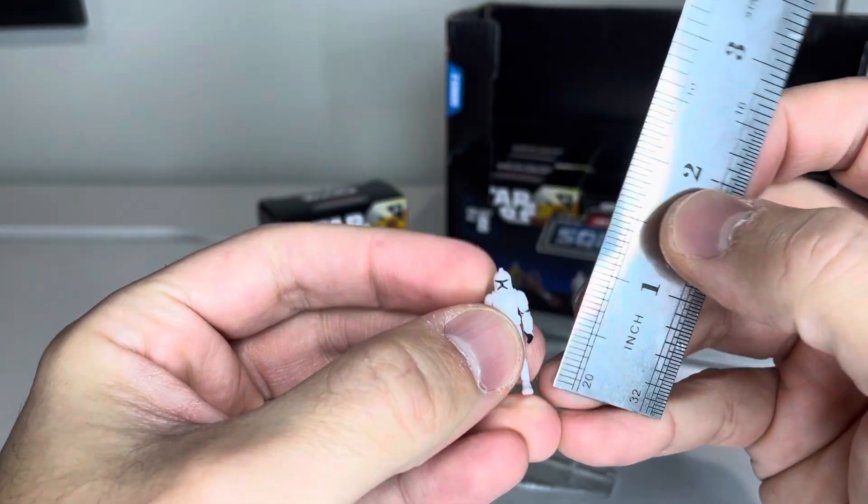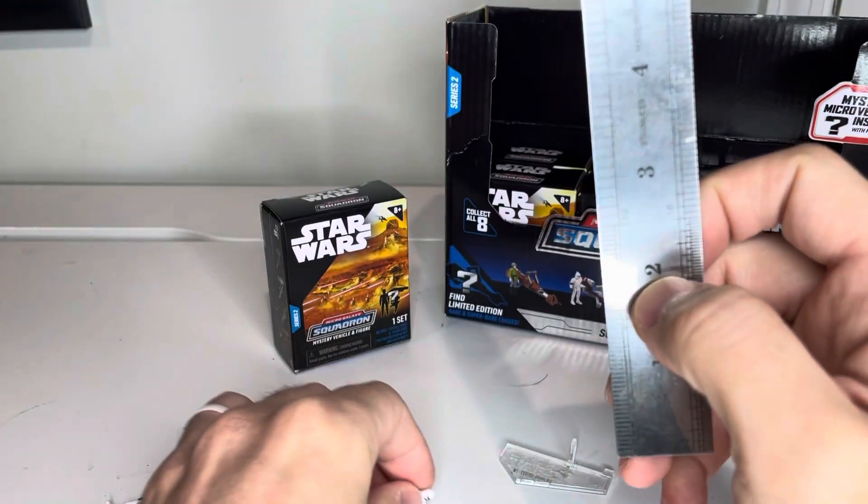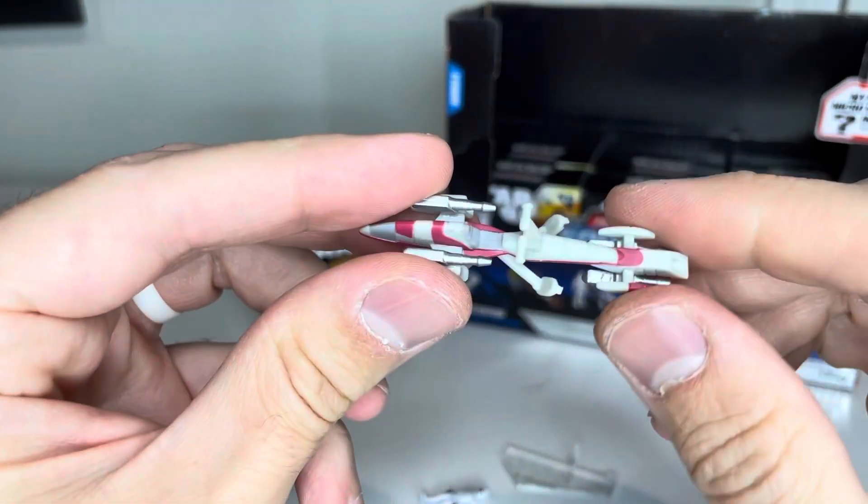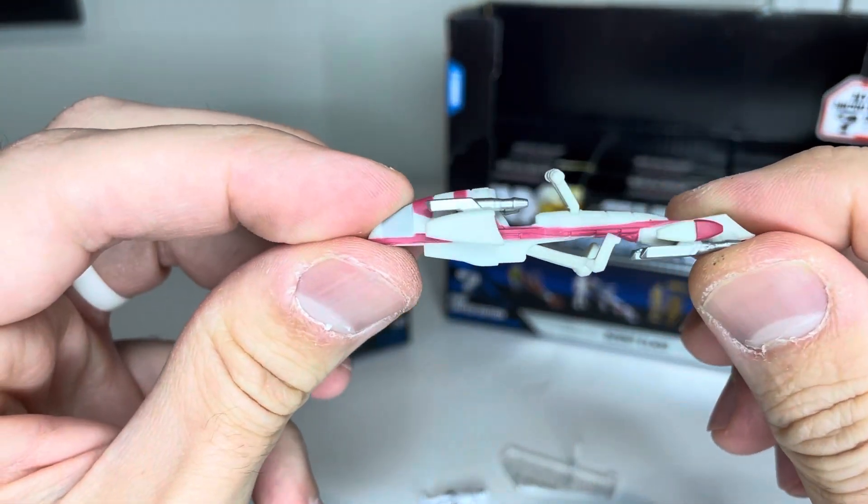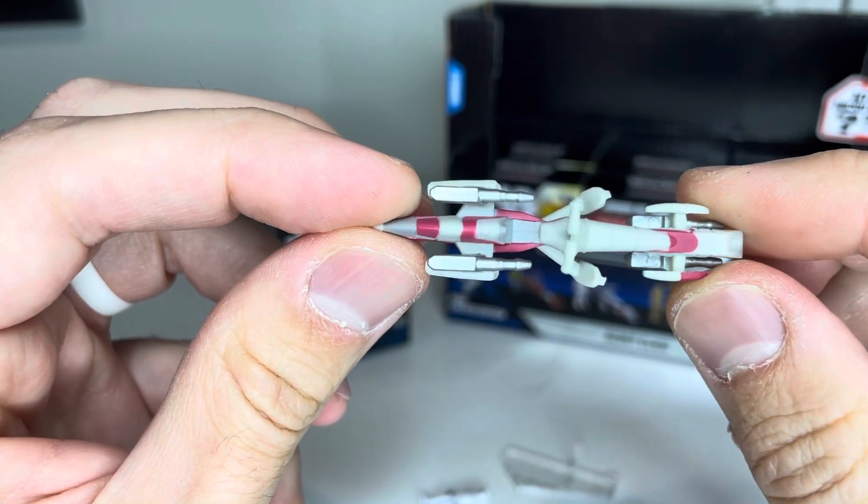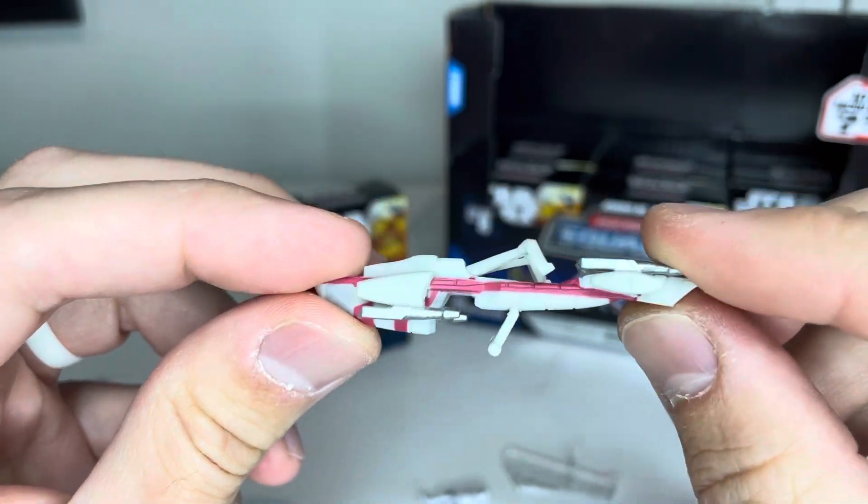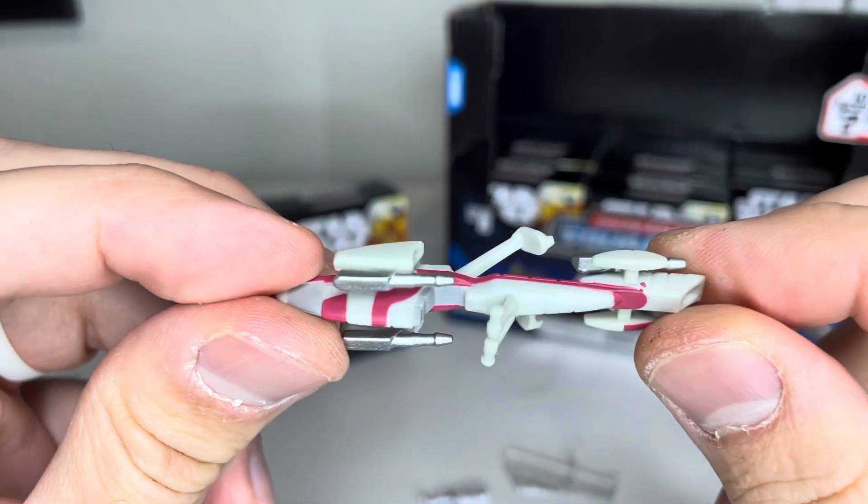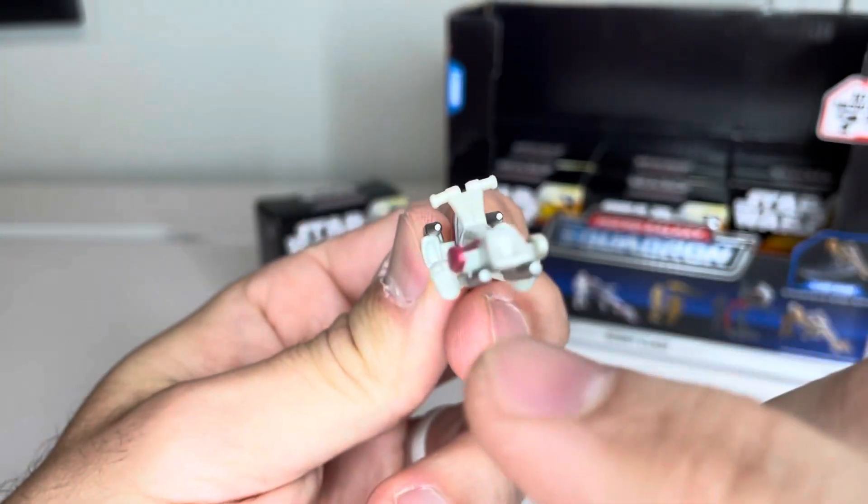Here is the BARC speeder itself. Some nice paint detail on here, and this is all machine painted, which is pretty cool to see that they can get that type of detail with that. You've got the little guns here on the front and the little foot stands.